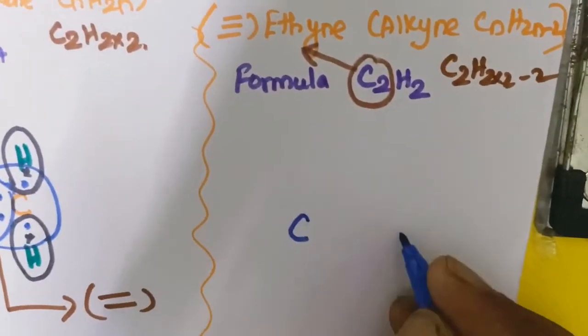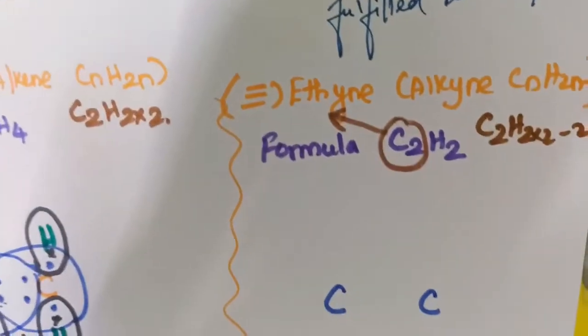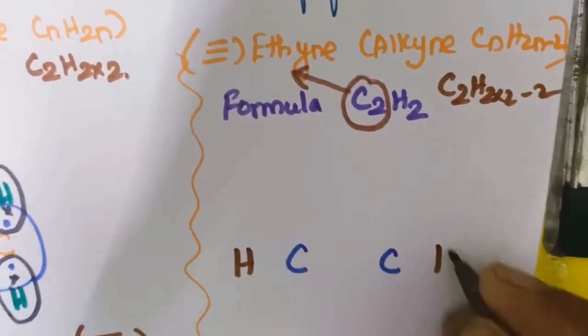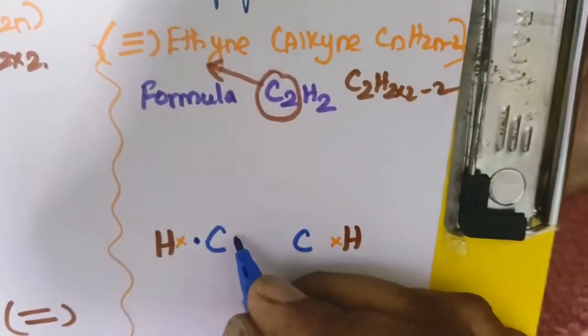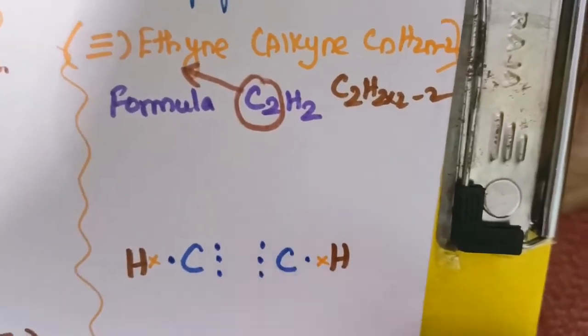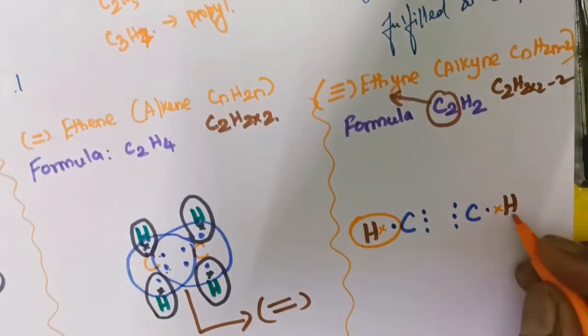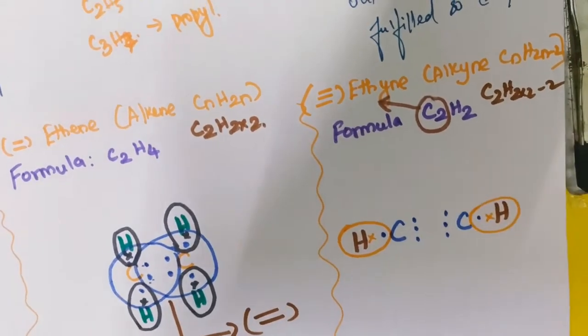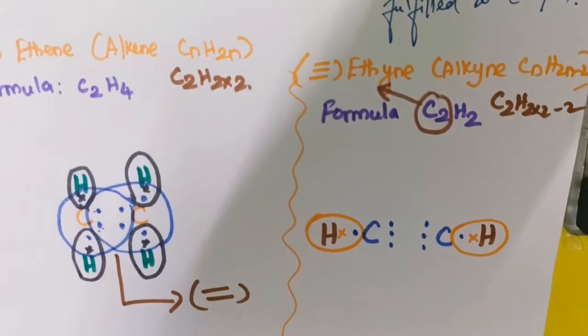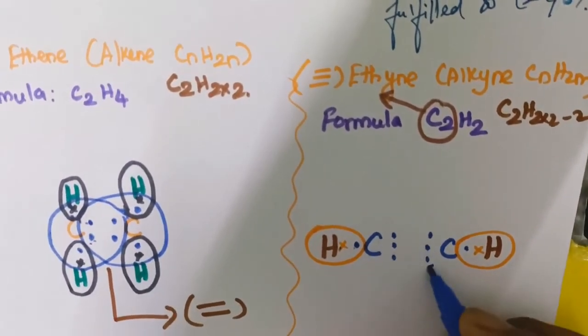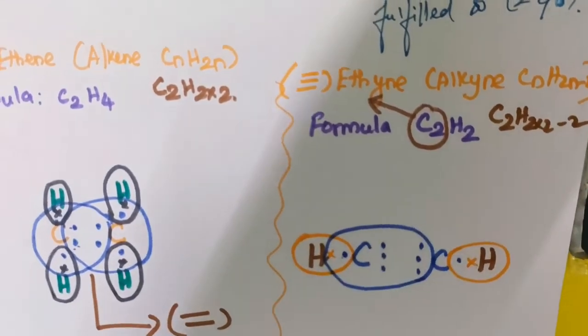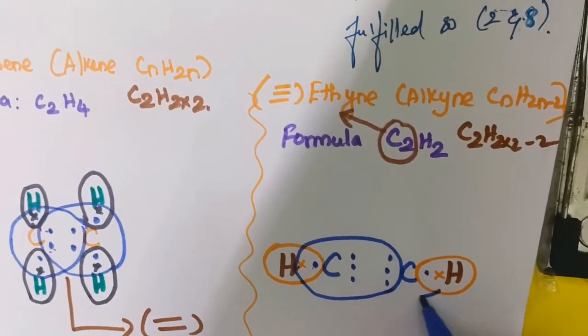How many carbons? 2 carbons. How many hydrogens? 2 hydrogens, each having 1 electron. Carbon has 4 electrons in the outermost shell. For convenience I write 1 electron toward the hydrogen and 3 electrons toward the other carbon, on each side. This hydrogen is fulfilled by getting 1 electron from the carbon. This carbon will be fulfilled by: 1, 2, 3, 4, 5, 6, 7, 8 — totally 8 electrons, getting 3 electrons from the other carbon.